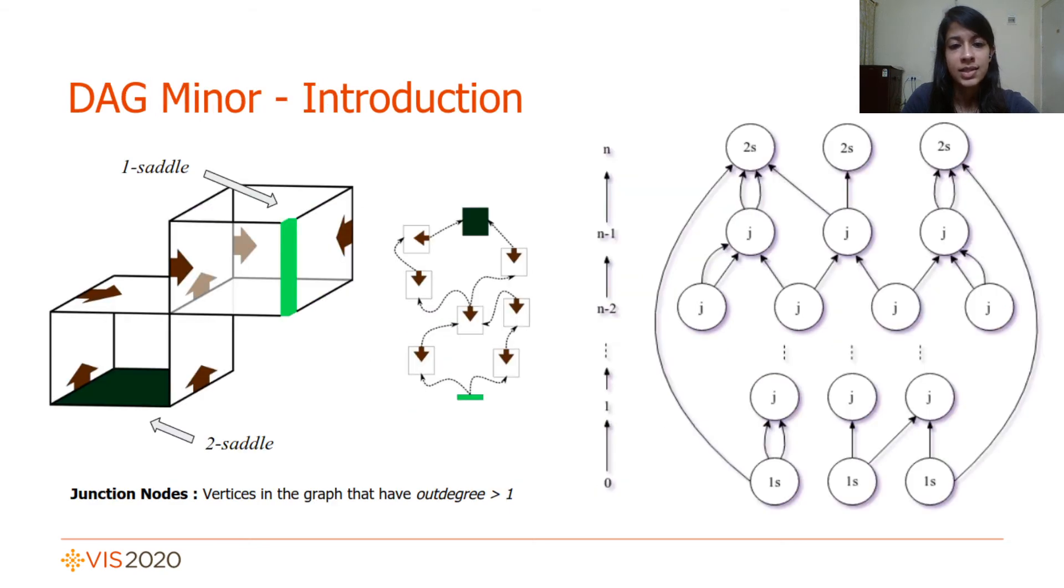The next task at hand is to reduce the saddle-path-counting problem to one that is amenable to parallelism. We do this by constructing a minor of the DAG by contracting all simple sub-paths, a transformation that gives us nodes that are either 1-saddles, 2-saddles, or junction nodes. Here, a junction node denotes a node whose out-degree is greater than 1.